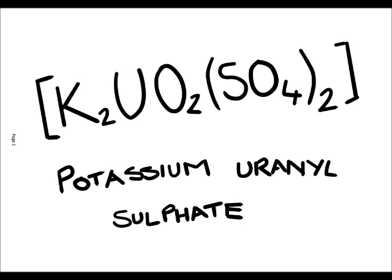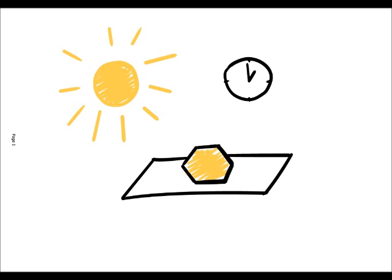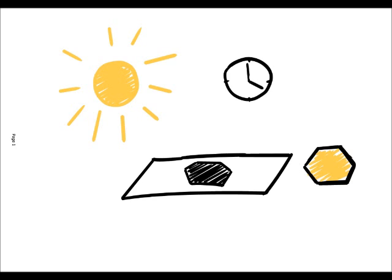He used potassium uranyl sulfate, exposing it to sunlight and then placing it on a covered photographic plate. As expected, the developed plate showed an image of the crystals.